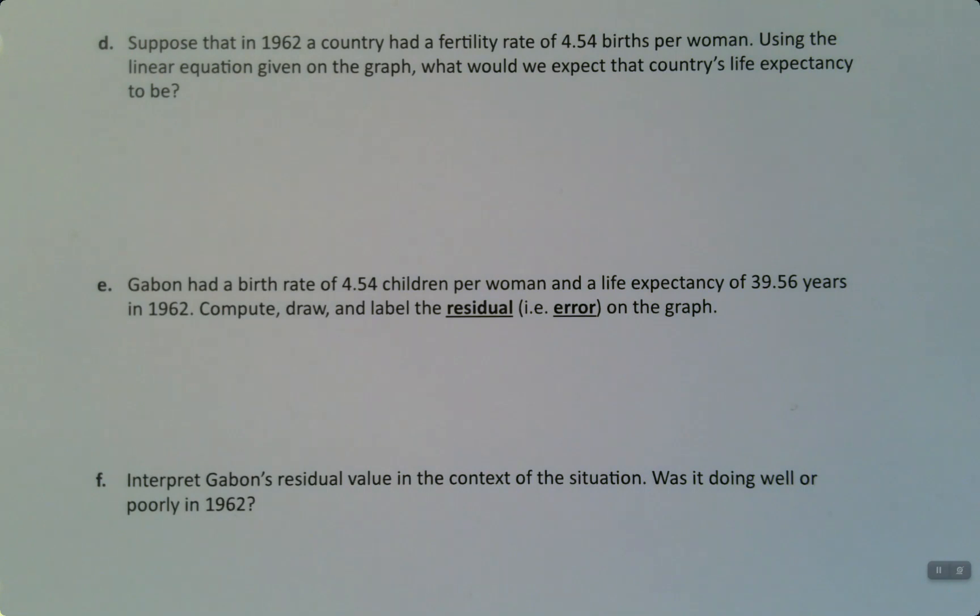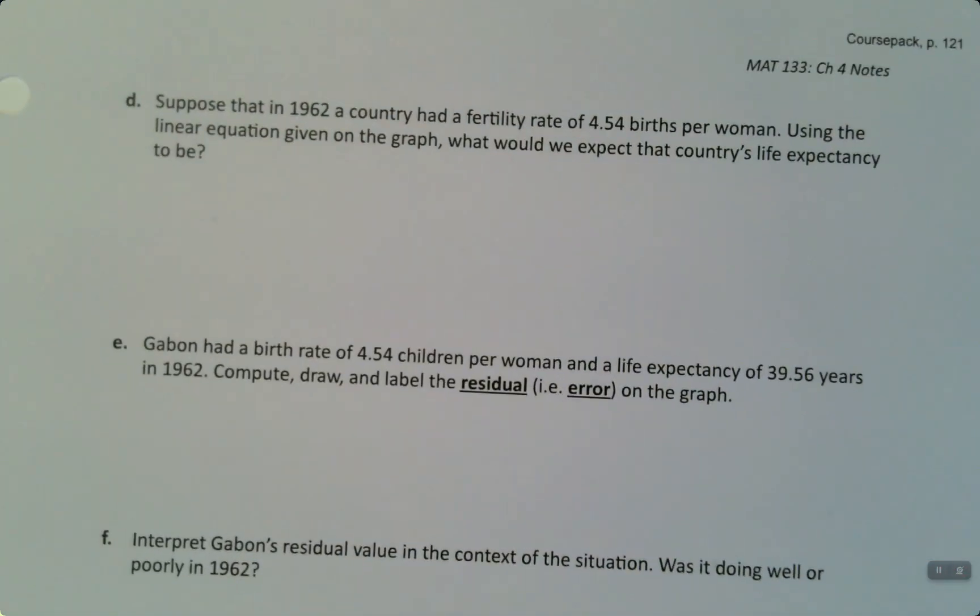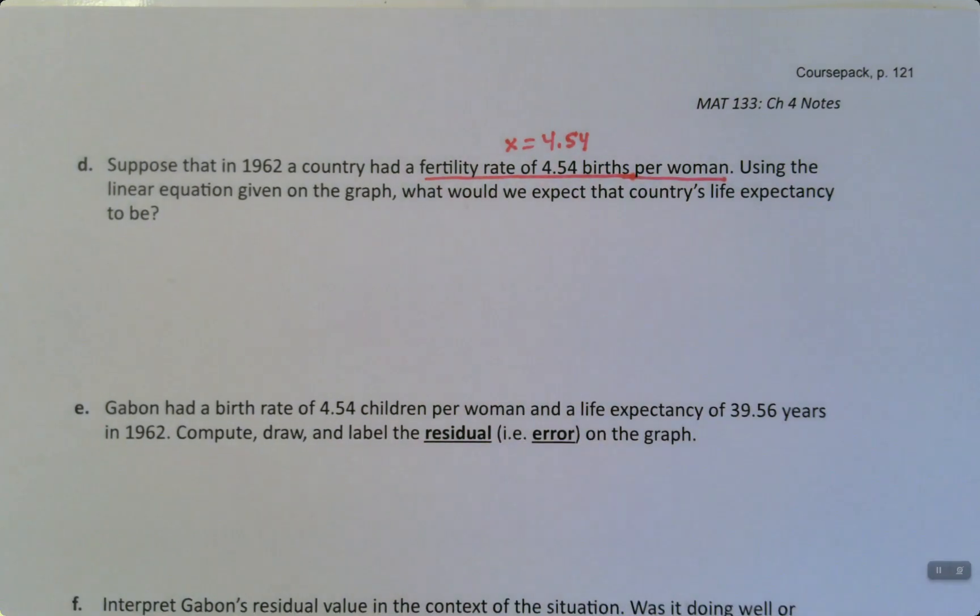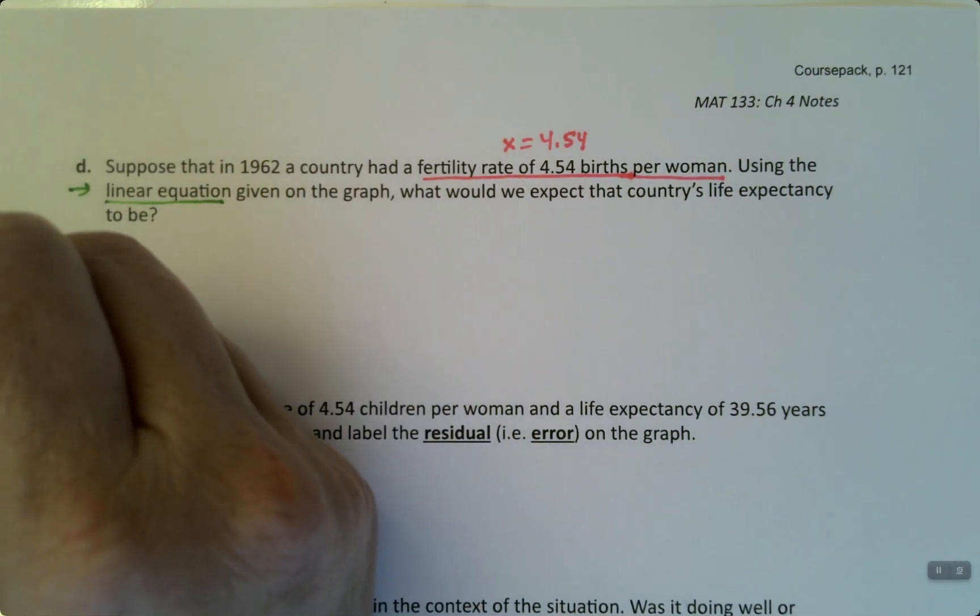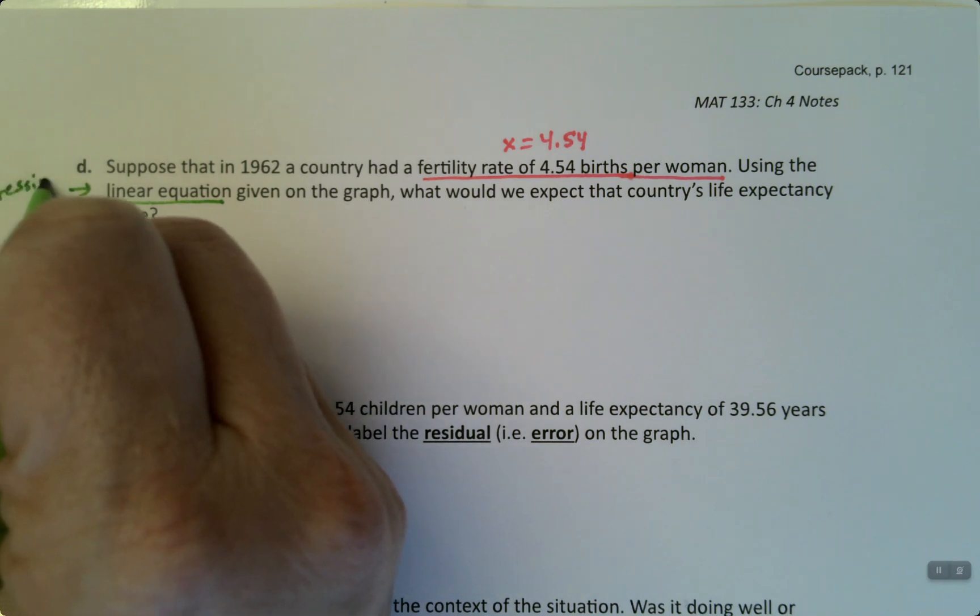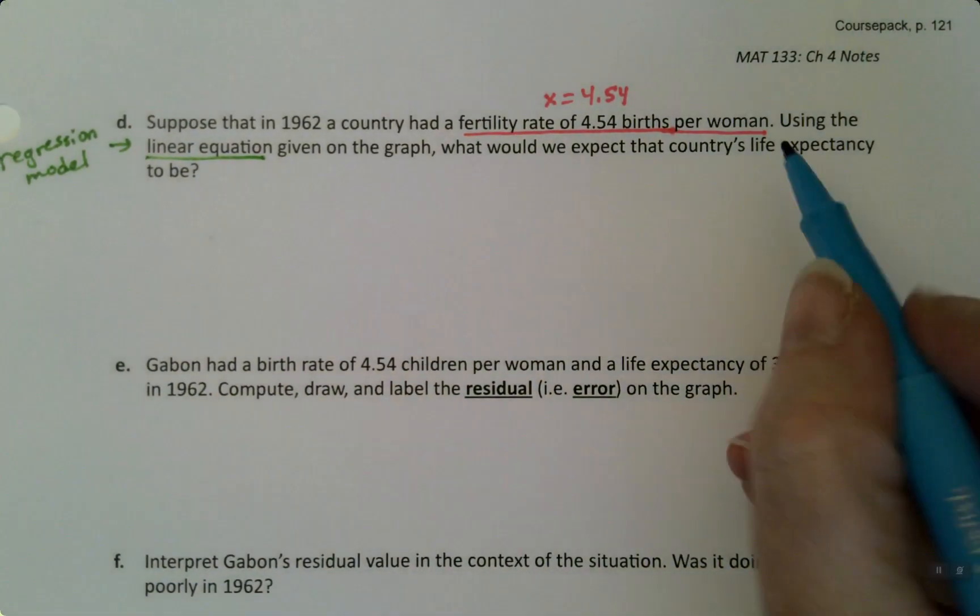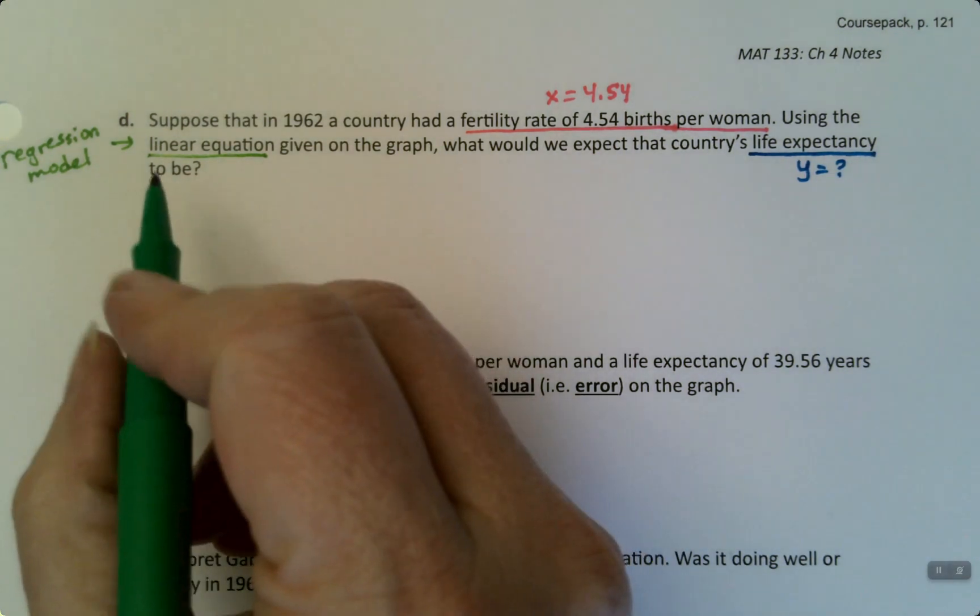This is kind of reversing the process of what we just did for the previous problem. Remember that the fertility rate is the x value. So they're telling us that we have a country that has a fertility rate of 4.54 births per woman. So that's telling us that x is 4.54. And now I write linear equation here, but I could say the regression equation or the regression model. We write that phrase a lot of different ways. So just be warned, it's not always written the same way. Sometimes we'll say the model or the regression model or regression line, they all kind of mean the same thing.